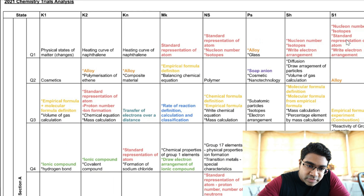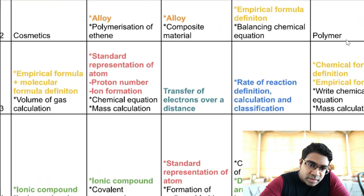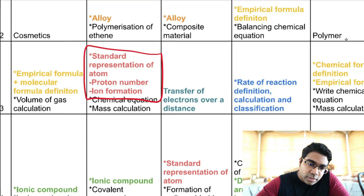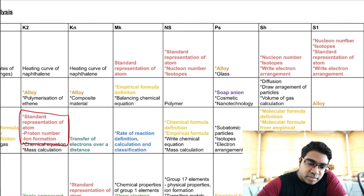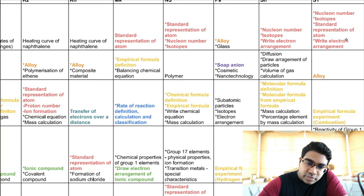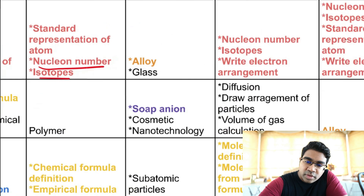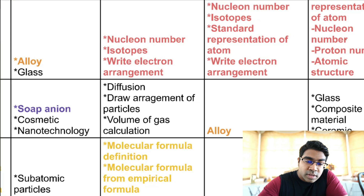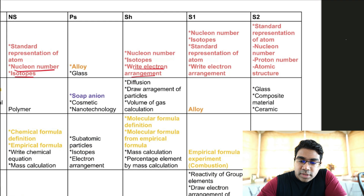Let's look at Section A first. Standard representation of atom is very popular — you have to know how to get your proton number and how to get your nuclear number. You can see it's been repeated in many states. Topics they're asking include nuclear number, isotopes from the standard representation of the atom, and writing the electron arrangement from the standard representation. These are all common questions regardless of the year.